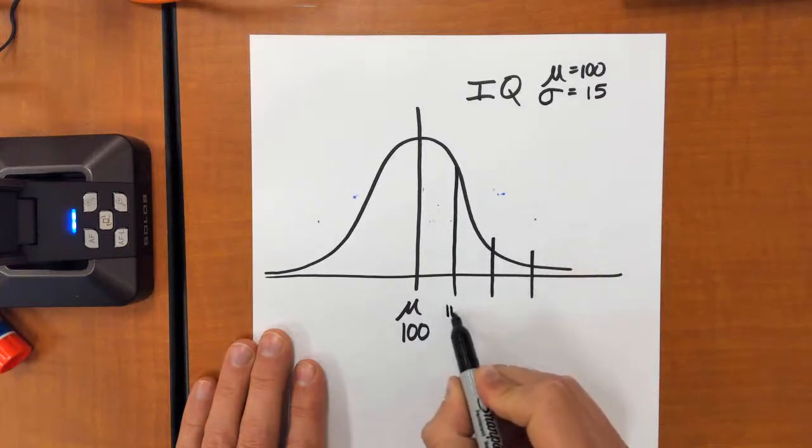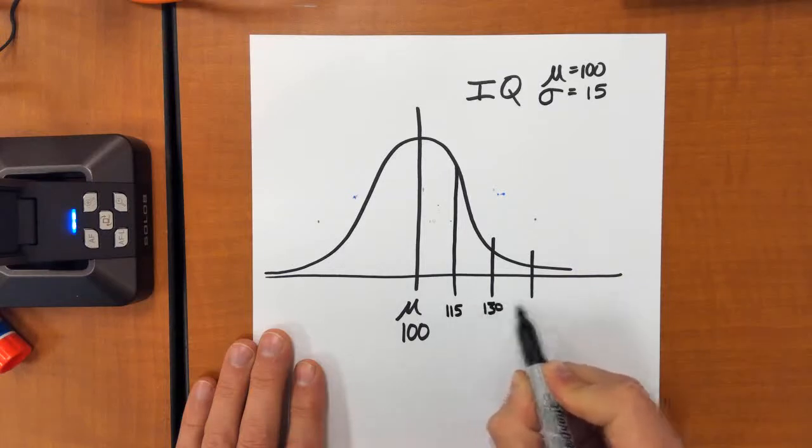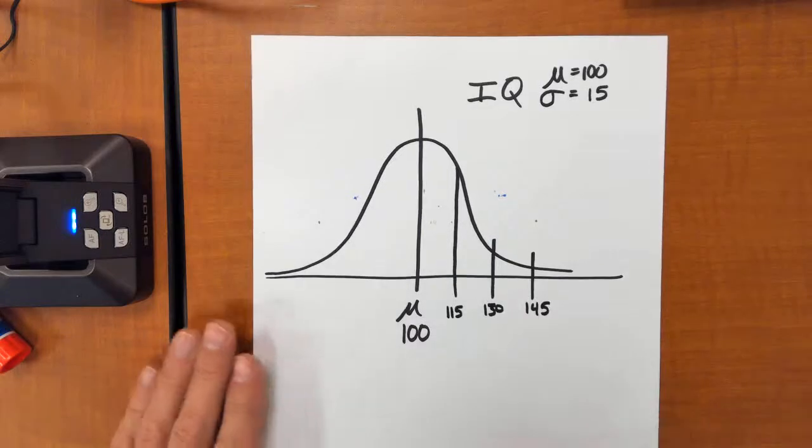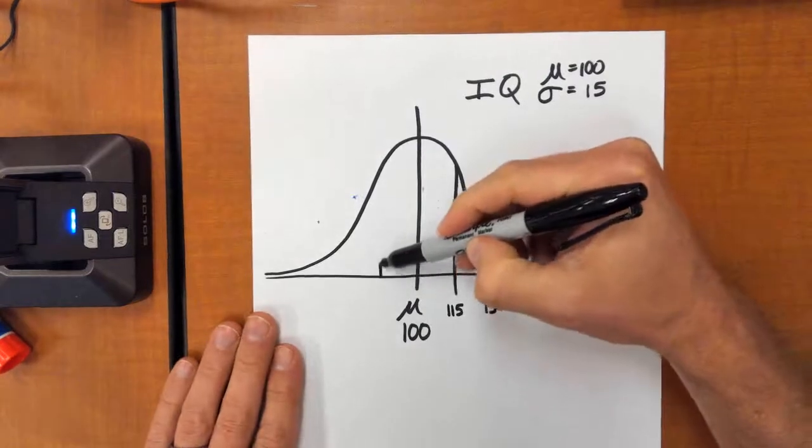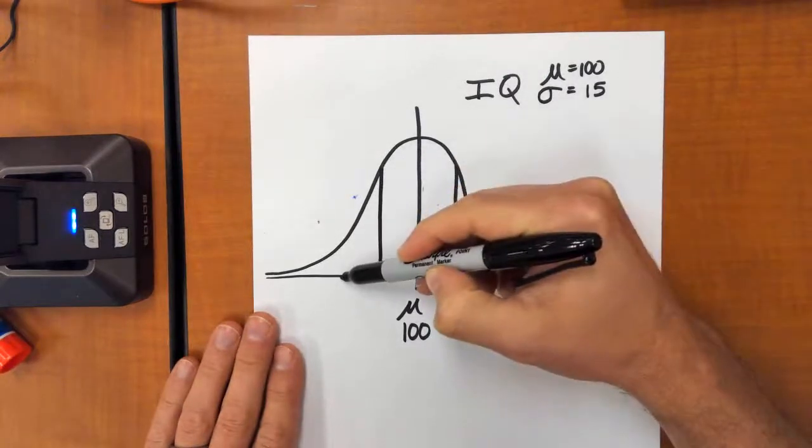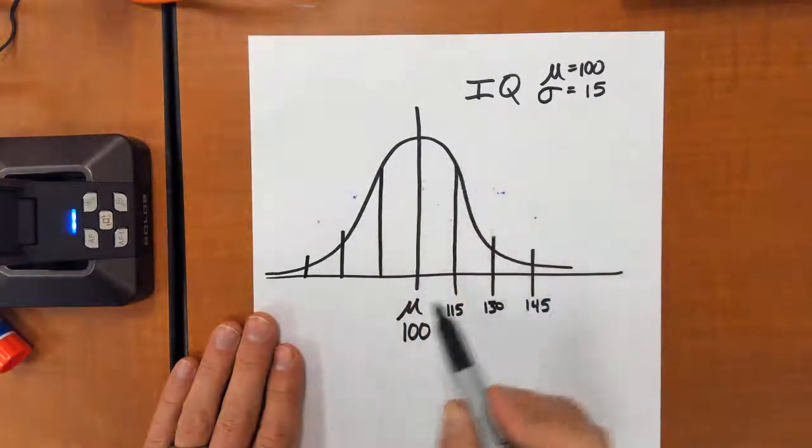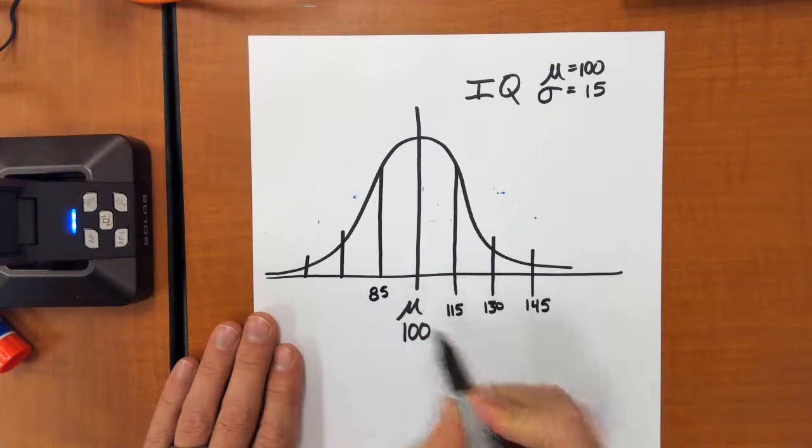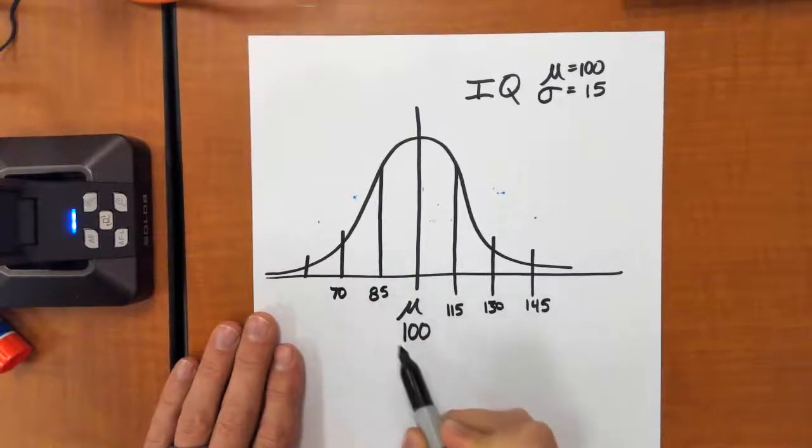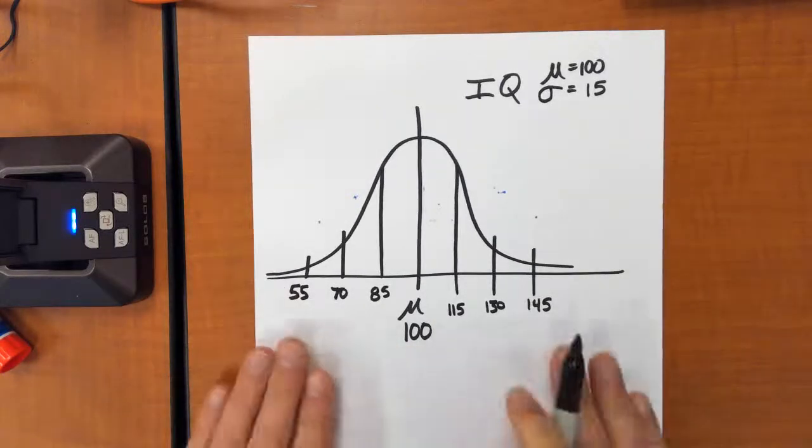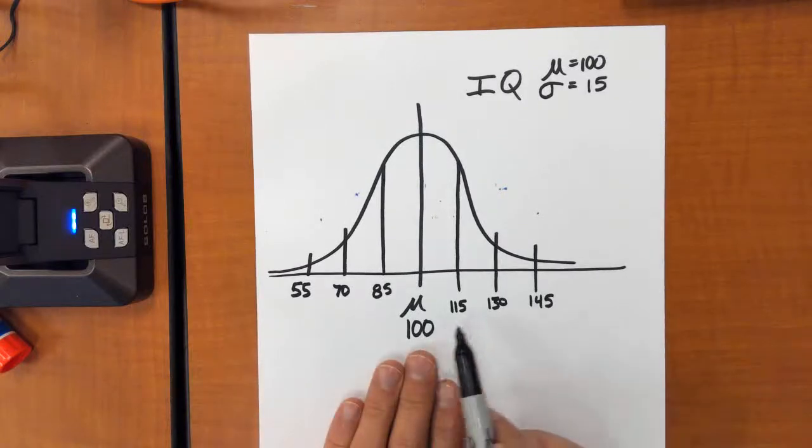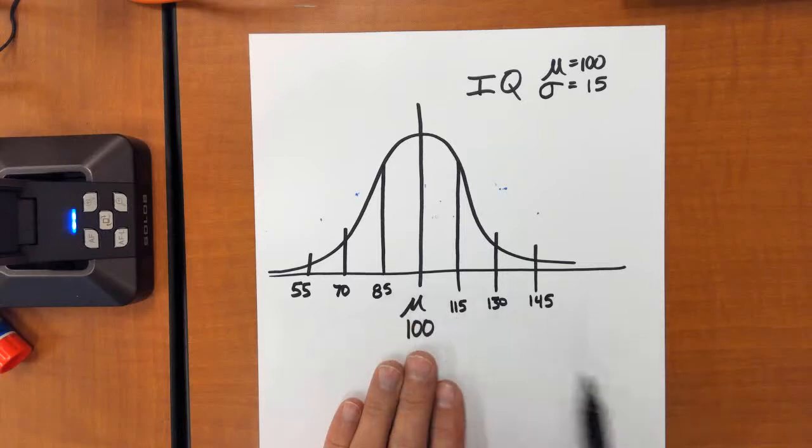We would have IQ scores of 115, 130, and 145. If we go below the mean of 100 and subtract 15, we would have 85, 70, and 55. So looking at this graph, we can see that one standard deviation above and one standard deviation below our mean would give us an IQ range of 85 to 115.